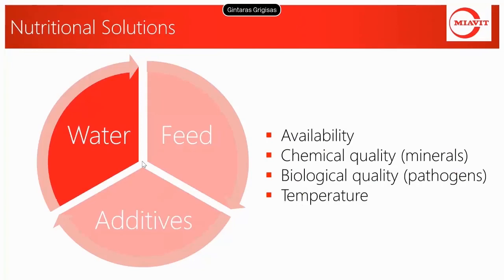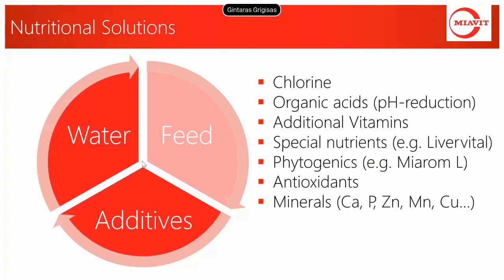Water is consumed roughly twice as much as feed, so it is one of the main nutrients and should always be watched closely. Water should be constantly available with acceptable quality in terms of chemical and biological contaminants, and temperature can also be important. Additives for drinking water can have quite different targets: there are additives to increase quality or reduce bacterial growth, working mainly in the water itself. The second option is the use of water additives to supply special nutrients to animals — well known are organic acids or different vitamins, but there are also more complex products with specific targets like Liver Vital, Myarome, antioxidants and minerals.